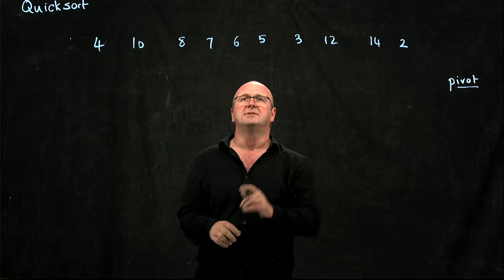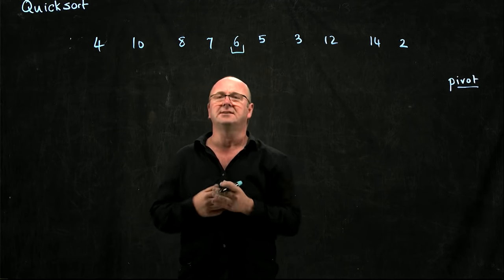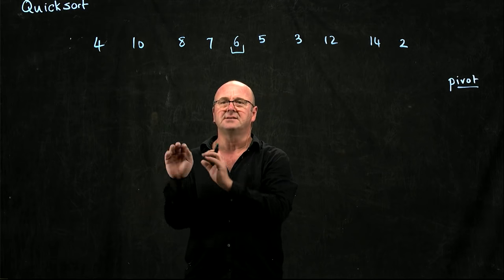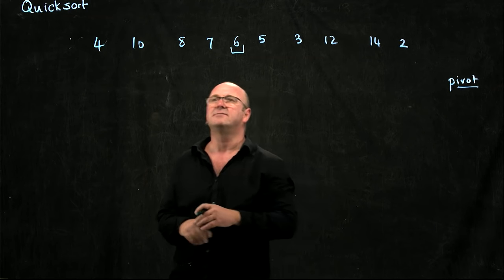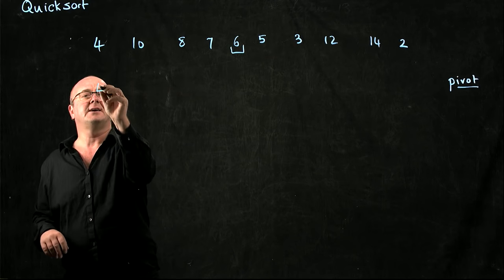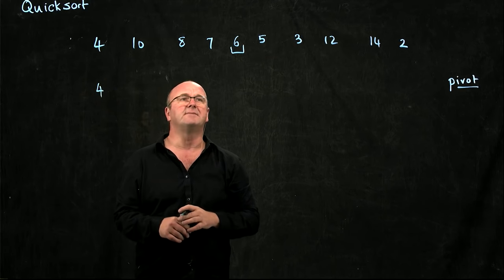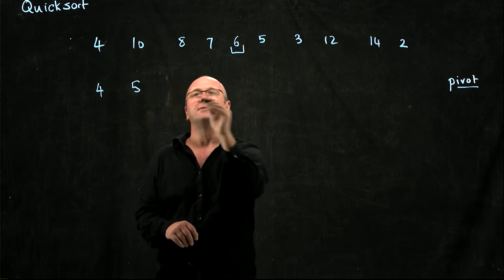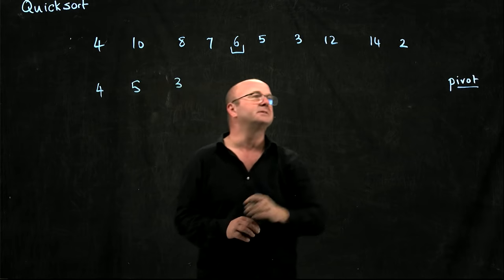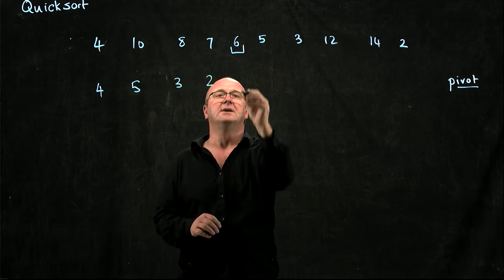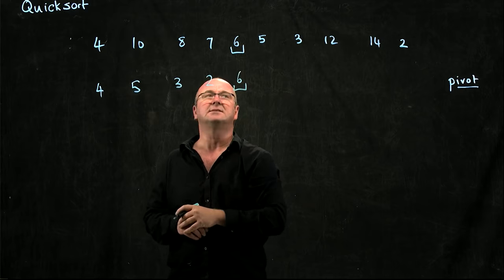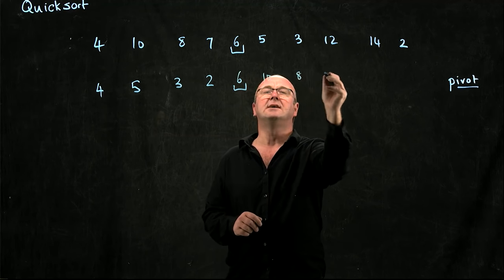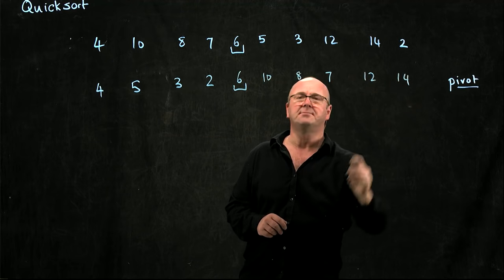For example, let's take our 6 right here as our pivot. We're going to move all of the smaller things to the left of the pivot and all of the bigger things to the right. So we're going to end up with 4, 5, 3, and 2 on the left. The 6 stays essentially where it is, and then all of the bigger things end up on the right of the pivot.